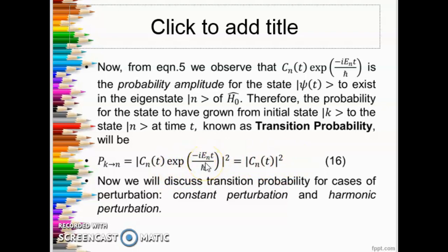We will discuss the calculation of transition probability and the cases of constant perturbation and harmonic perturbation in our next lecture. In part 2 we will talk about constant perturbation and in part 3 we will talk about harmonic perturbation. This is not the end of this lecture — you have to continue with parts 2 and 3 in order to have complete knowledge of time dependent perturbation theory. With this I come to an end of part 1. Thank you so much for watching.